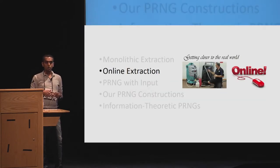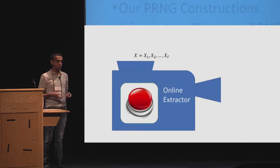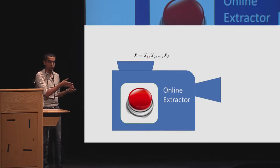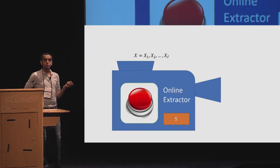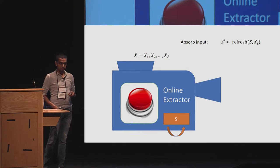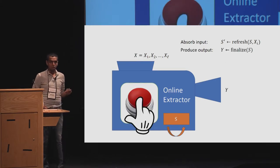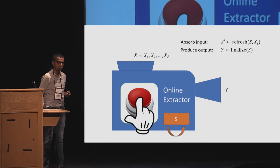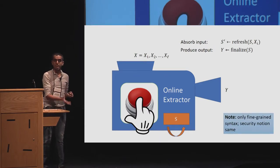Let's go back and look at online extraction. What is online extraction? It is when the inputs actually come in multiple blocks. That's denoted by X1 through XL. And now, we want to produce an output. This primitive uses a state S. It absorbs the input using a refresh function, and it produces an output, Y finalize of X. There are two functions here, refresh and finalize. What is essentially happening is that it iteratively absorbs the input, and then it finally produces output by calling the function finalize. Note that this is a fine-grained syntax, but the security definition is still the same.